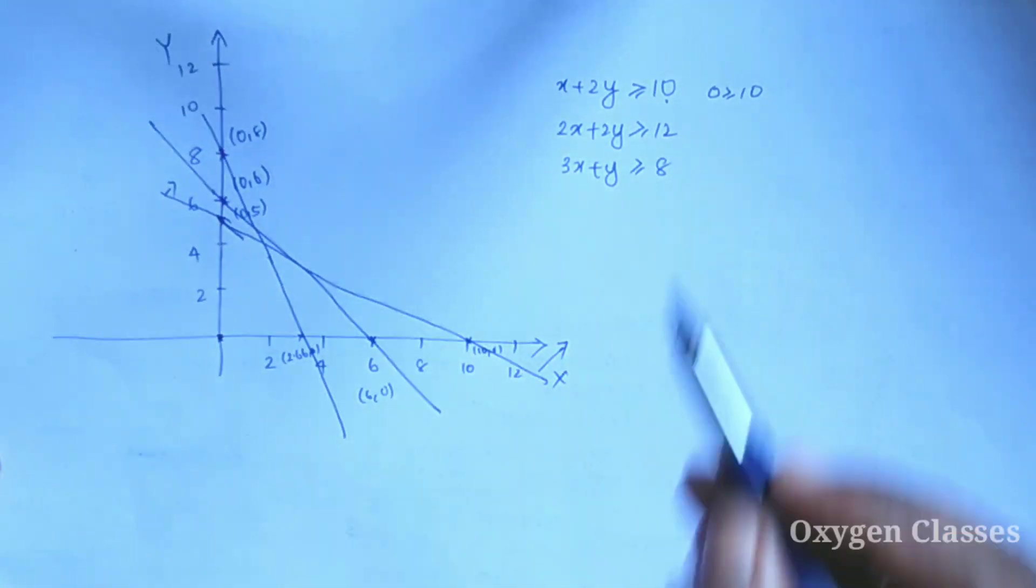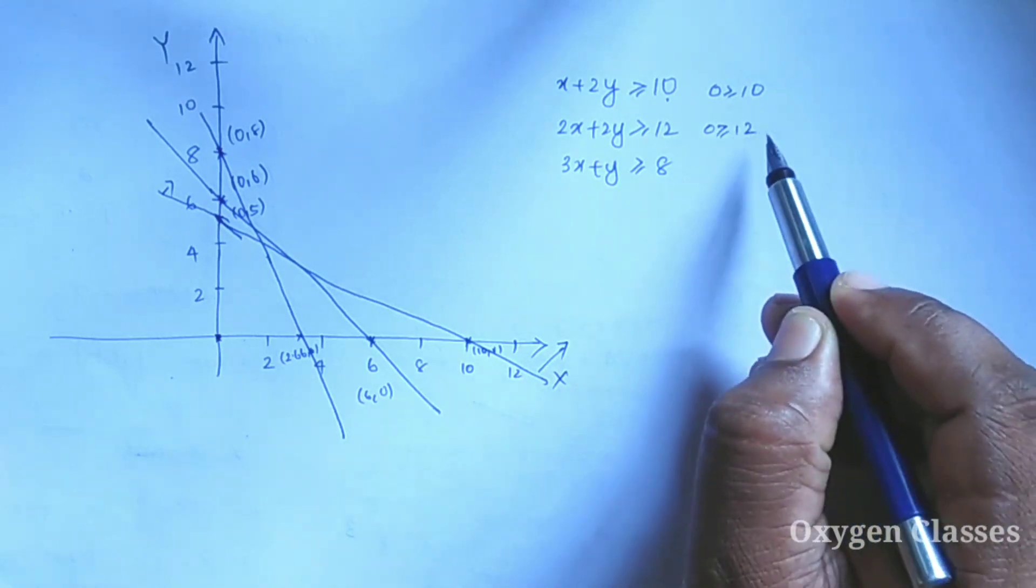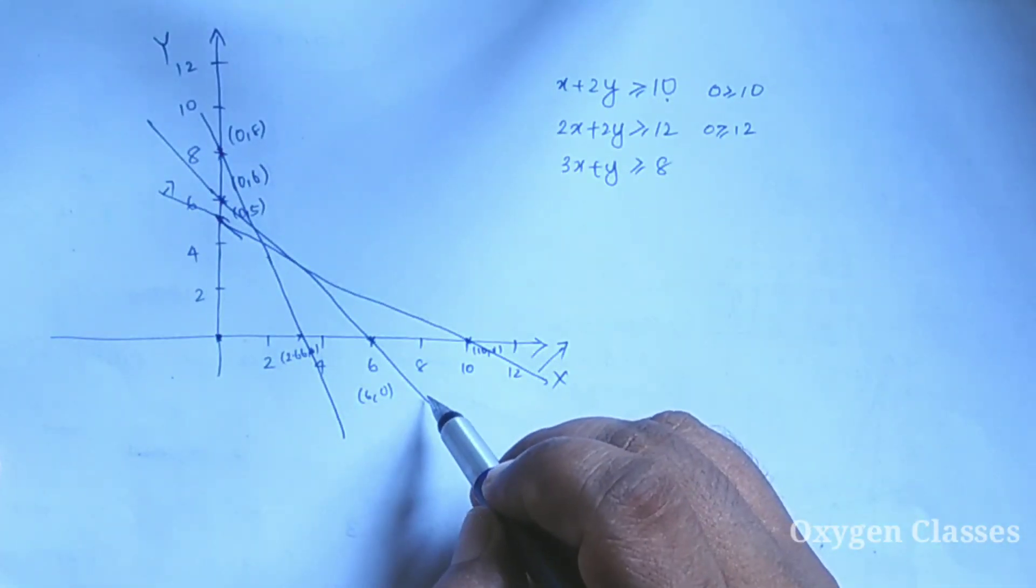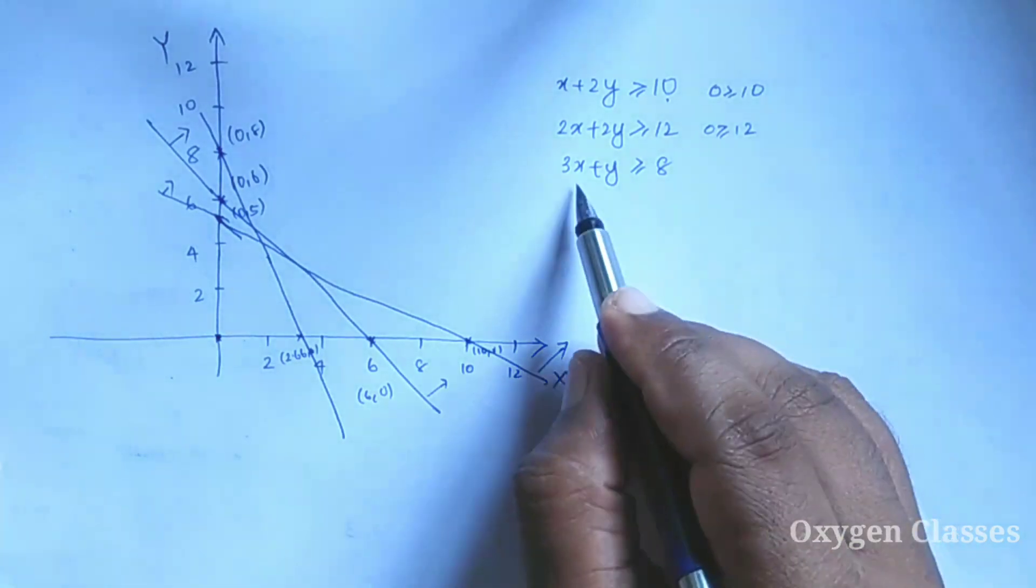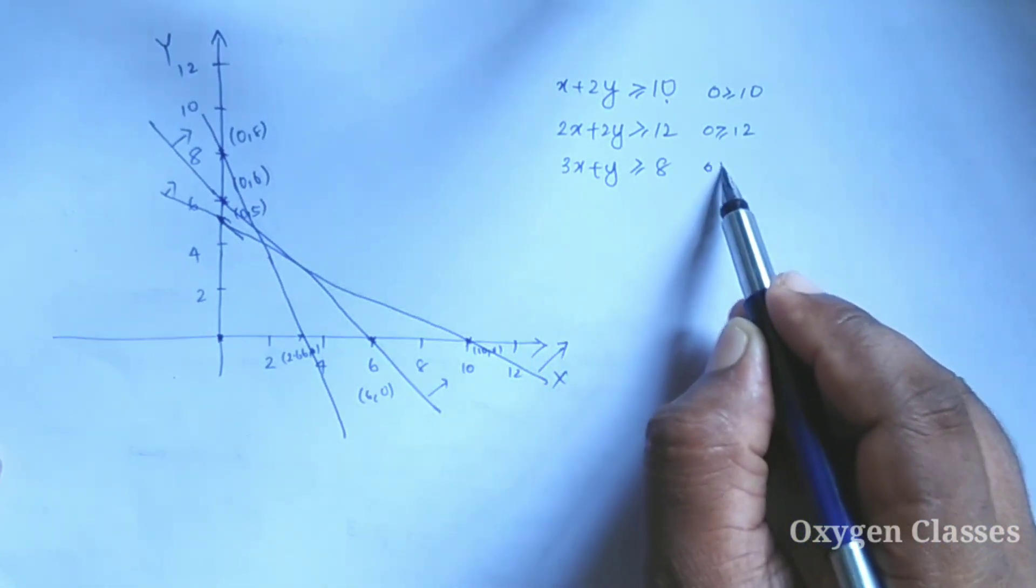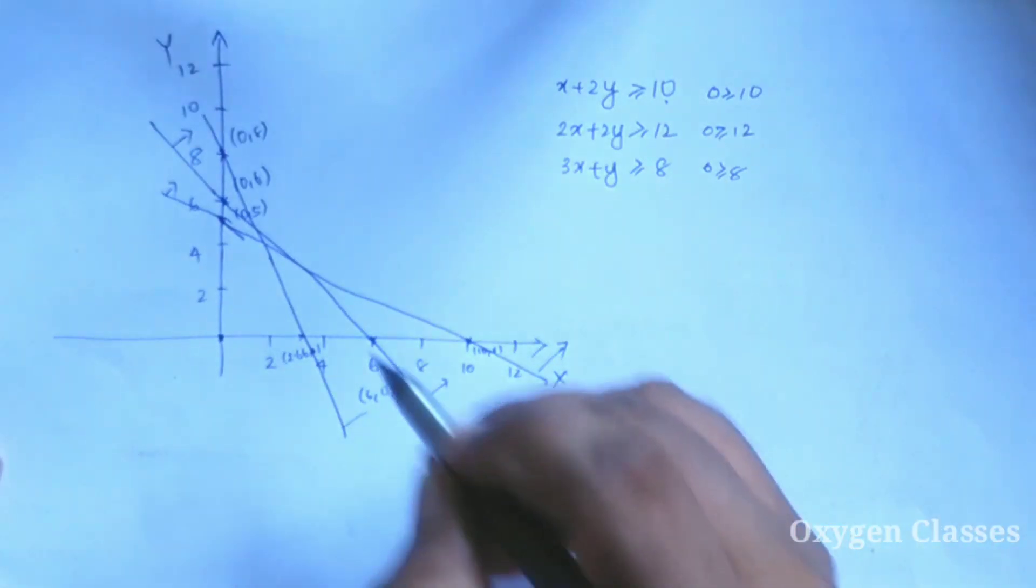For the second line, substituting (0, 0): 0 is not greater than or equal to 12, so again the region is on the other side. For the third line, substituting (0, 0): 0 is not greater than or equal to 8, so the region is on the opposite side for all three lines.